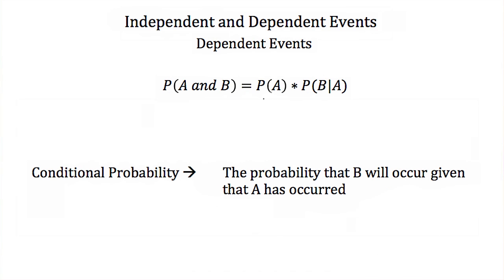Now let's talk about dependent events. If A and B are dependent, or B is dependent upon A, and we want the probability of A and B happening, that's equal to the probability of A times the probability of B if A happens. This is the conditional probability — the probability that B will occur given that A has occurred.